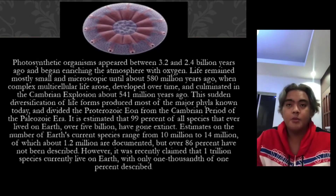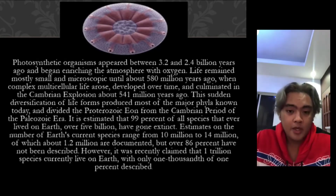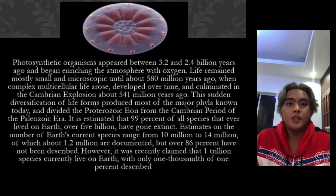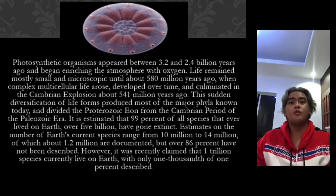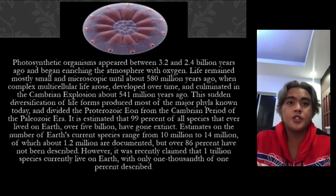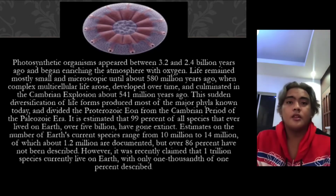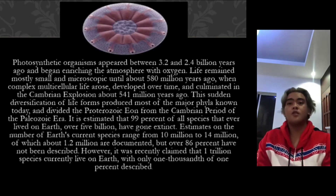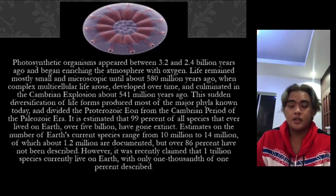Photosynthetic organisms appeared between 3.2 and 2.4 billion years ago and began enriching the atmosphere with oxygen. Life remained mostly small and microscopic until about 580 million years ago, when complex multicellular life arose, developed over time, and culminated in the Cambrian explosion about 541 million years ago. The sudden diverse proliferation of life forms produced most of the major phyla known today and divided the Proterozoic Aeon from the Cambrian period of the Paleozoic era. It is estimated that 99% of all species that ever lived on Earth — over 5 billion — have gone extinct.